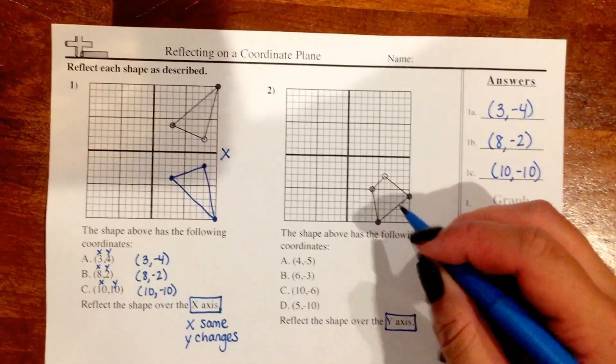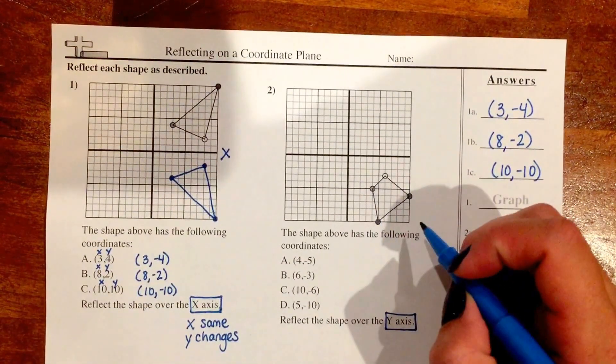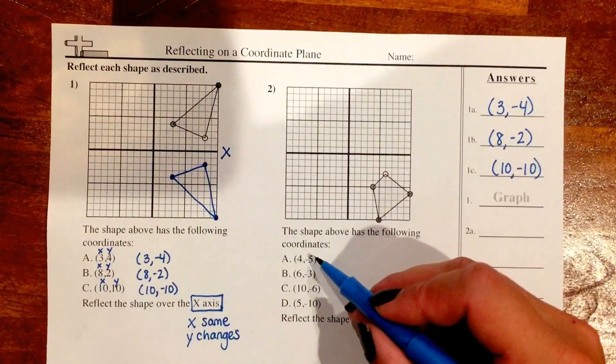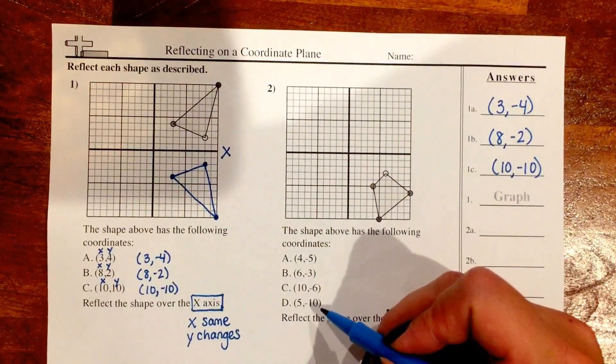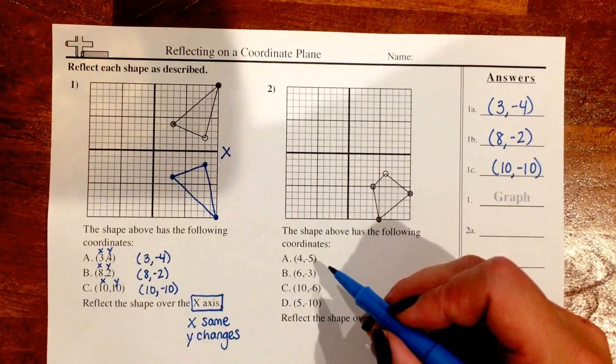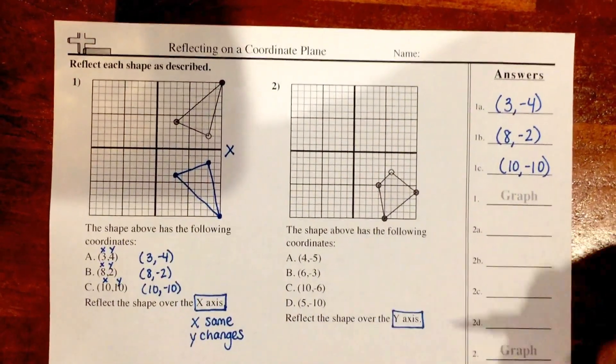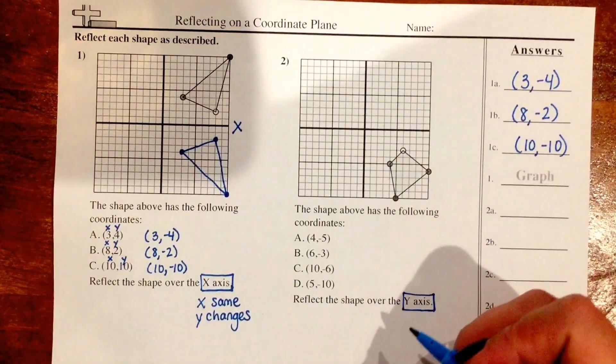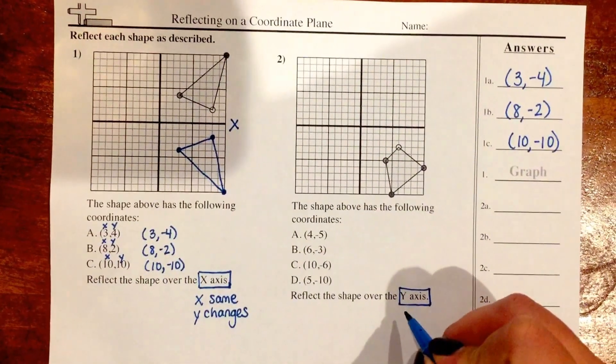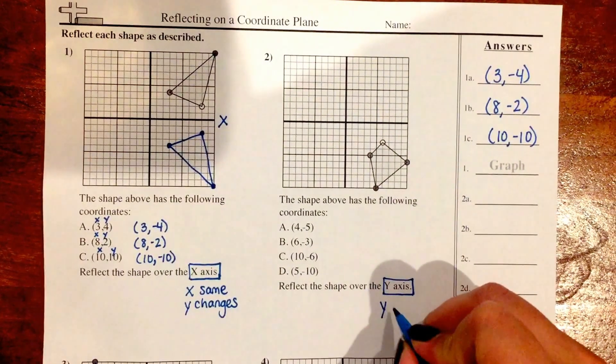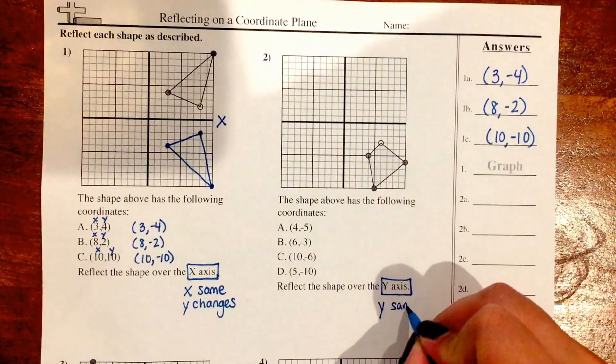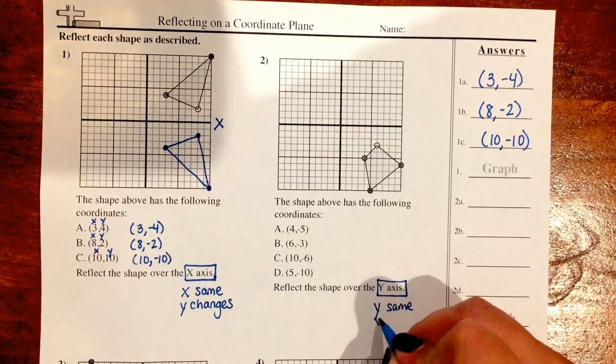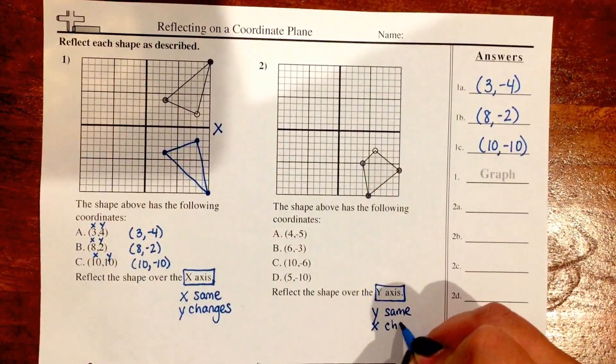If we look at number two, we already have graphed a quadrilateral, and underneath that we have four points A, B, C, and D that have the ordered pairs for that quadrilateral. If we think of our rules from class, when we reflect over the y-axis, the y-coordinate stays the same and the x-coordinate is the one that changes.